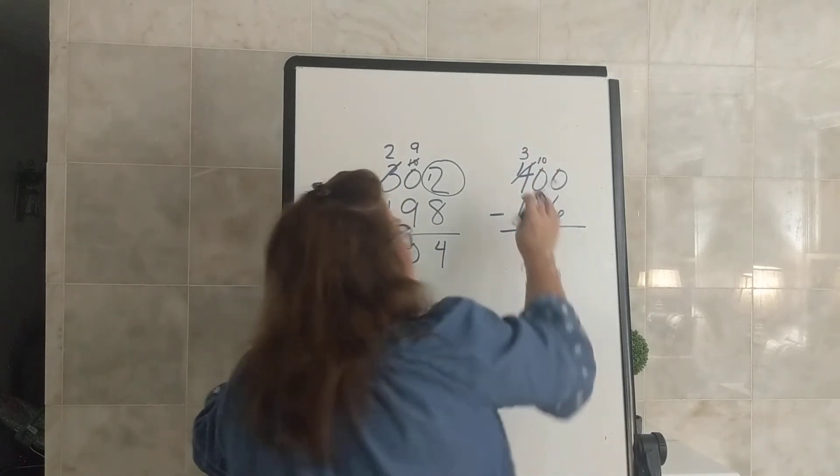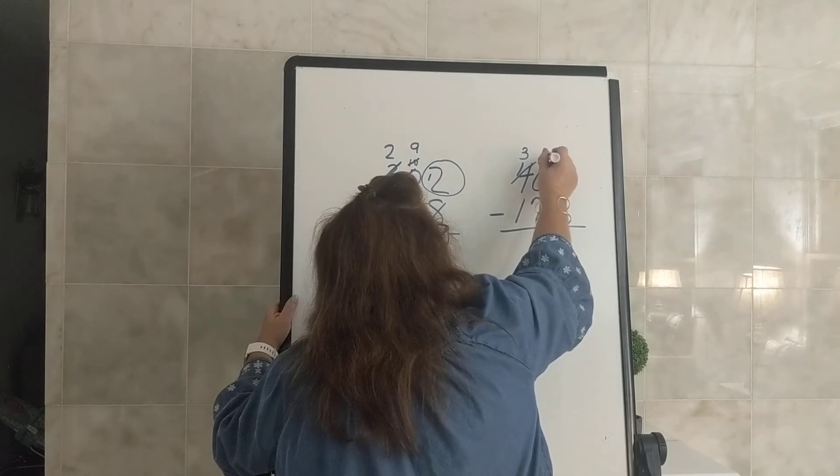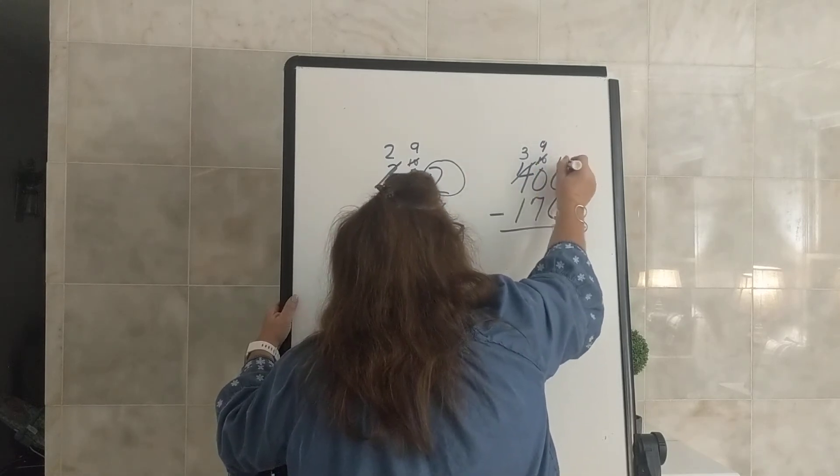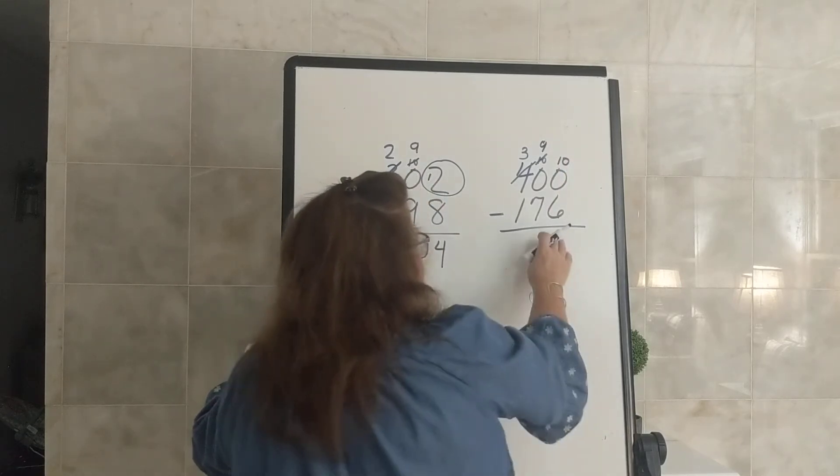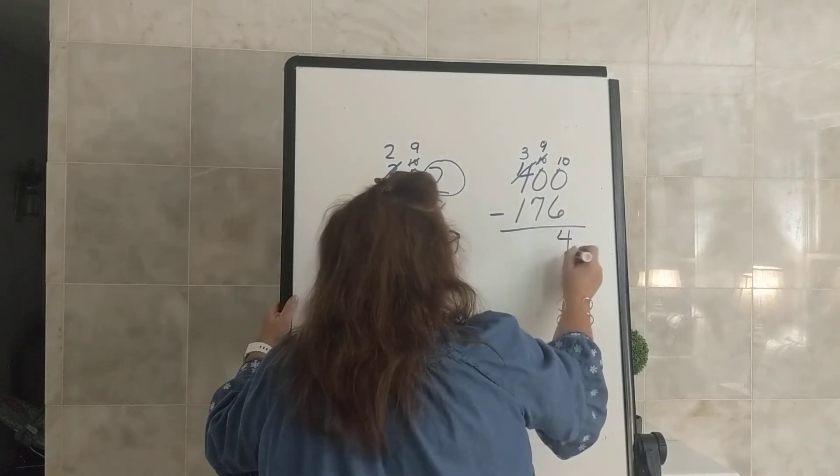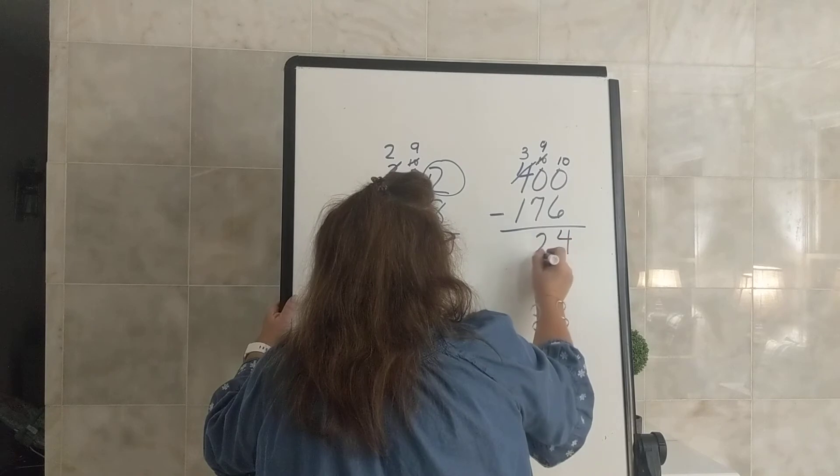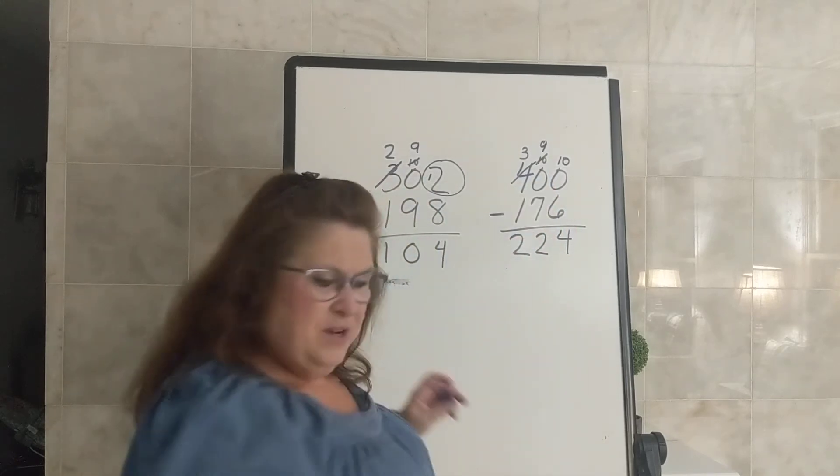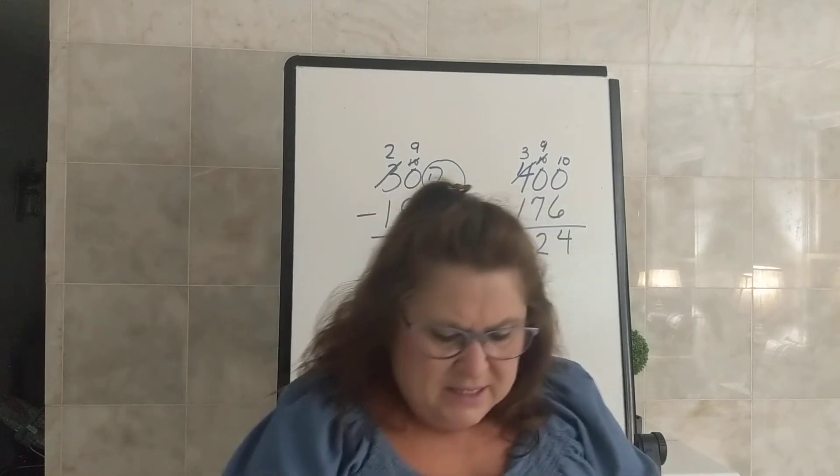So now we have something we can borrow from him. We borrow one from him. He becomes 9, and our 1 comes with this 0. And we have 10. 10 minus 6 is 4, 9 minus 7 is 2, and 3 minus 1 is 2. So our difference is 224.